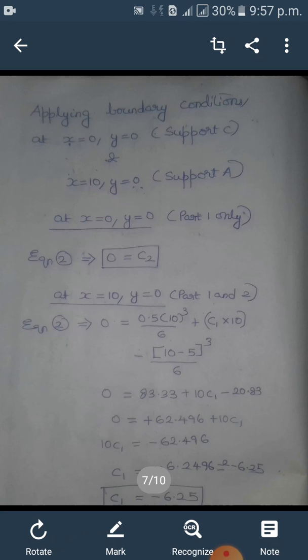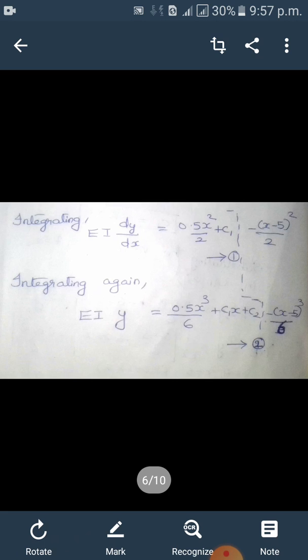You are considering the portion within the first part, so beyond the dotted line you are not considering. EI y equals 0.5x³/6 plus C1x plus C2. If you apply y equals 0 at x equals 0, you get C2 equals 0.